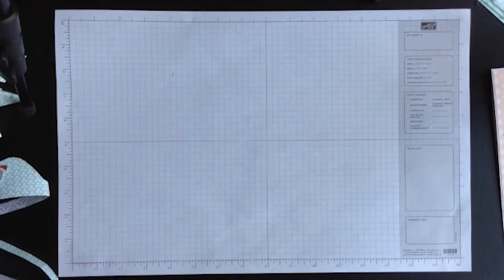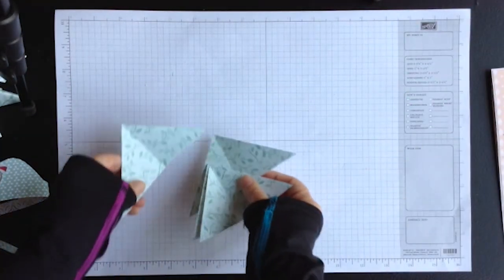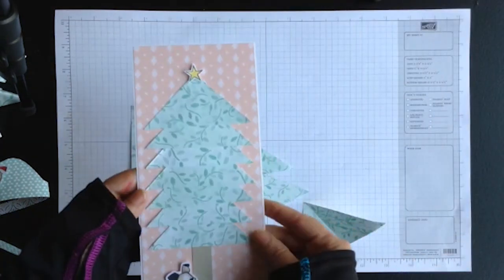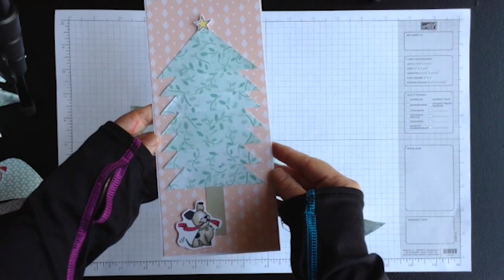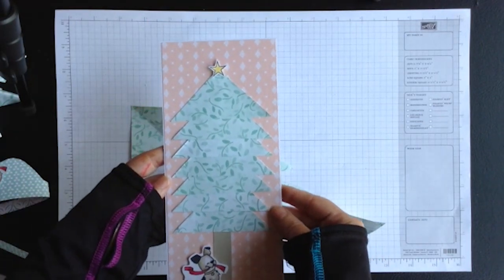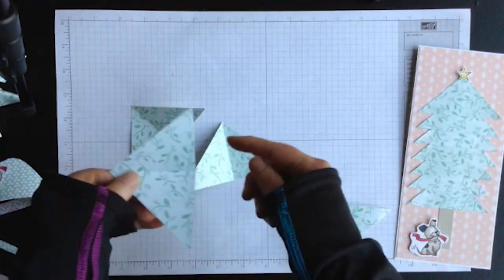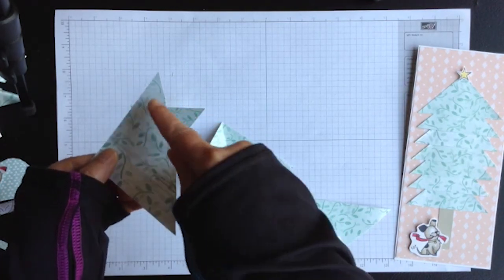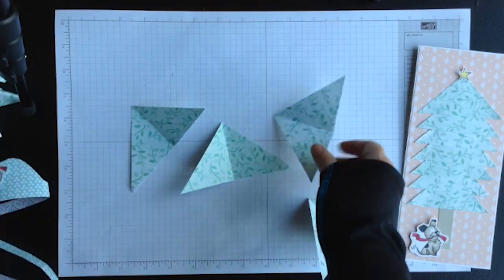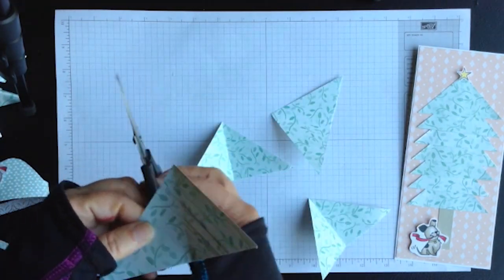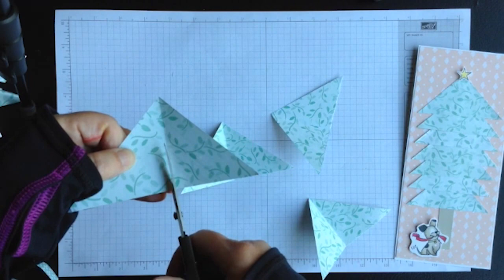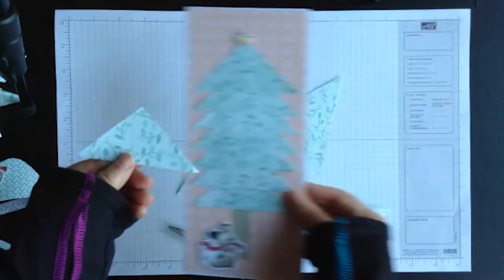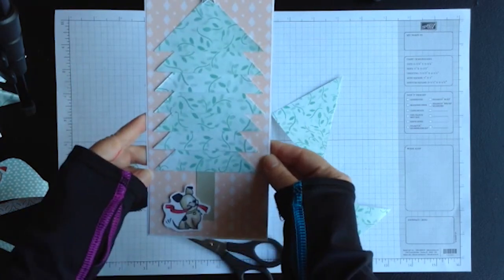And then a bonus idea is to use the triangles that were cut away to make a card. I made this little card here and to do that I just took the triangles, because these had been cut by hand they were a little bit rough, so I used my paper trimmer to trim those up and then used a pair of scissors to cut through the center and ended up with little triangles that were then able to make this card.